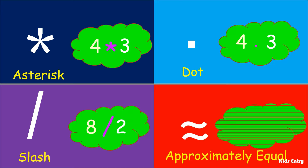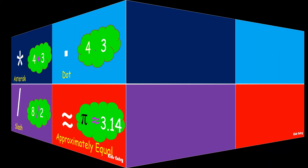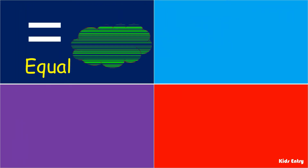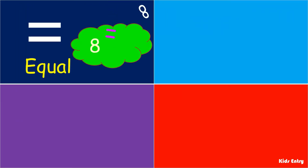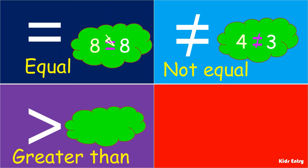Approximately equal sign — this sign is showing approximately equal to the same number. Equal sign — this sign is showing exactly the same number. Not equal sign — this sign indicates that two numbers are not the same. Greater than sign — this sign is used to compare and show the greater valued number.